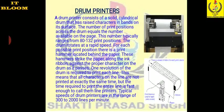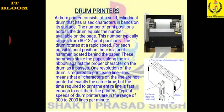One revolution of the drum is required to print each line, meaning all characters on a line are not printed at exactly the same time, but the time required to print the entire line is fast enough to call it a line printer. The typical speed of drum printers ranges from 300 to 2000 lines per minute.